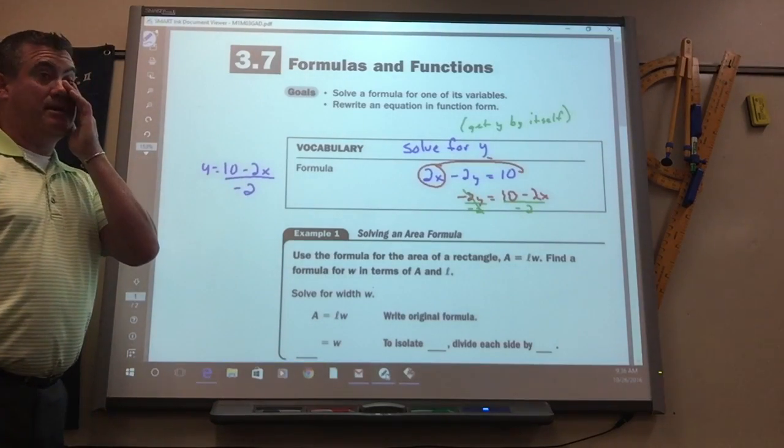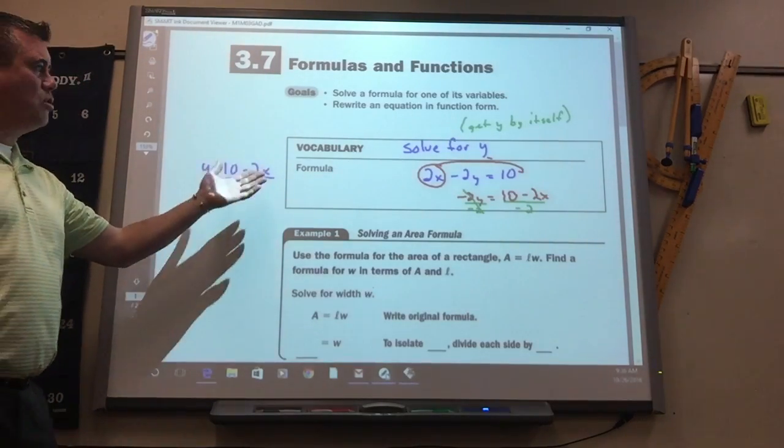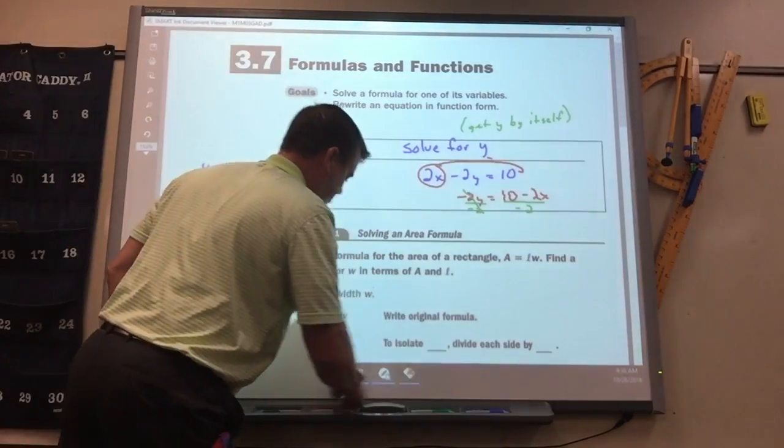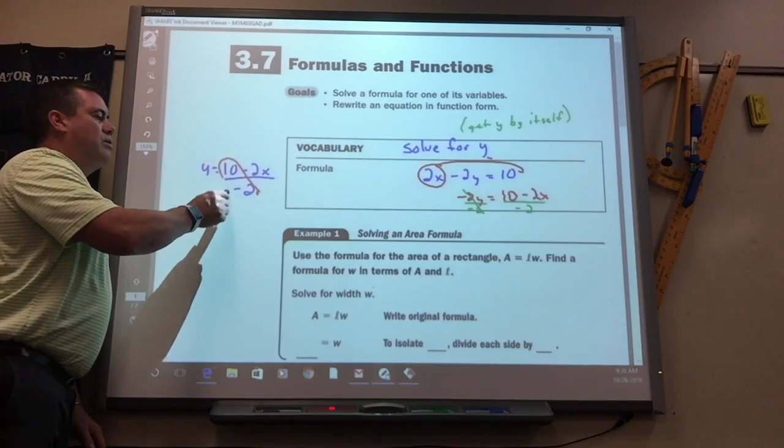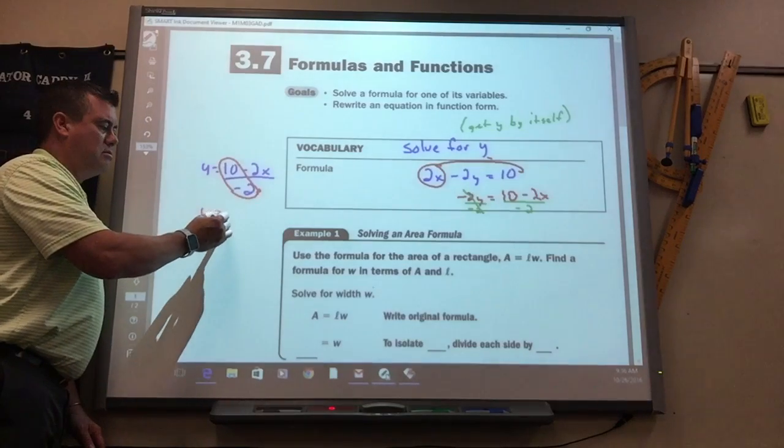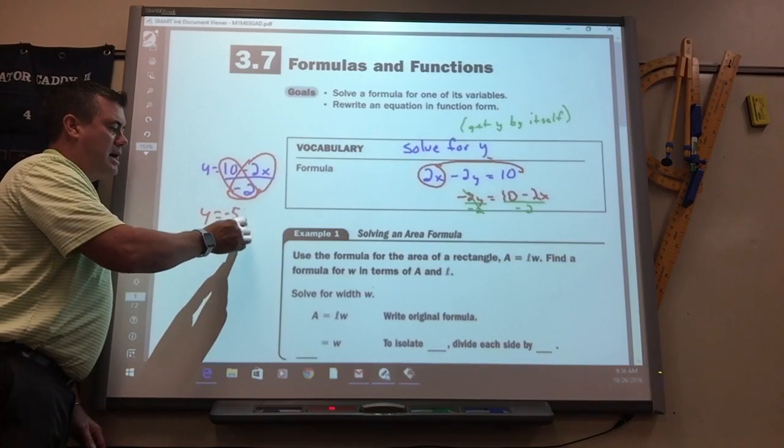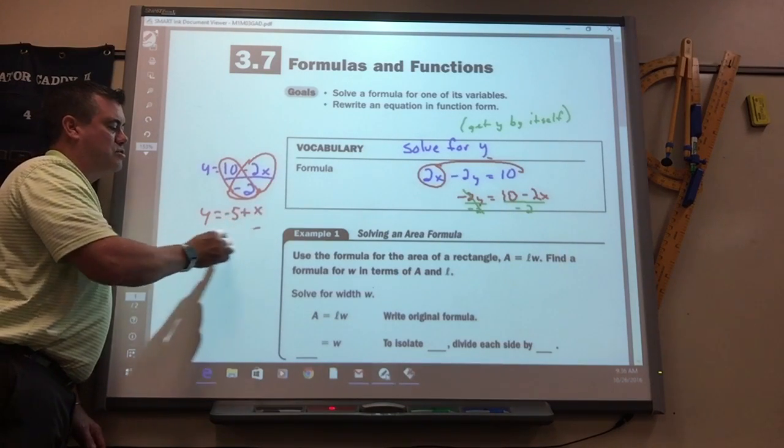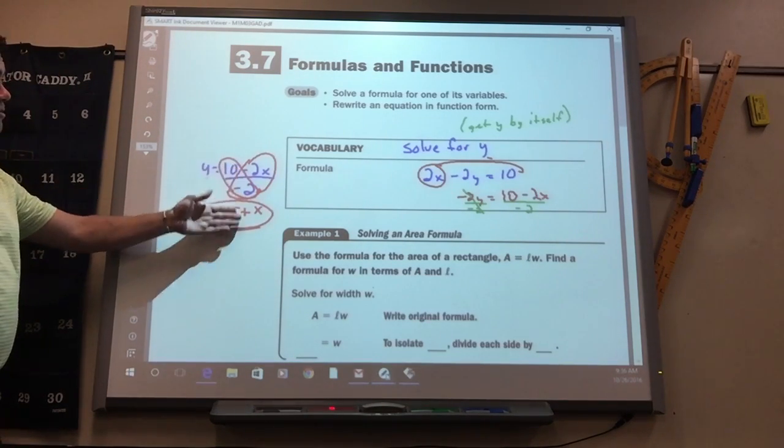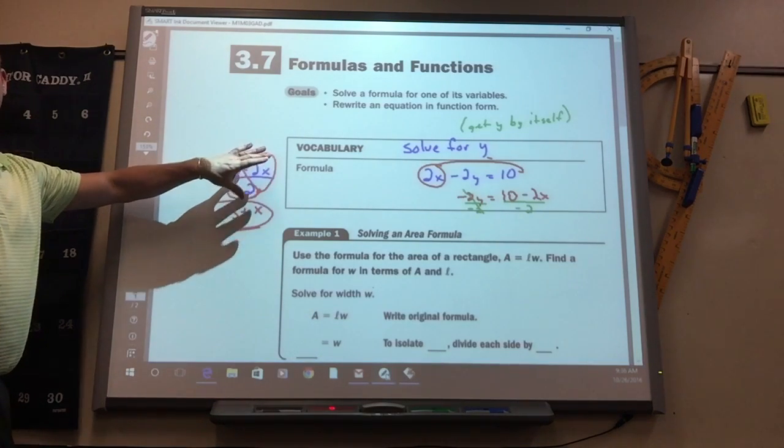y equals 10 minus 2x divided by negative 2. Now, sometimes they tell you to simplify it as far as you can. If they don't tell you that, you can quit right there because the whole idea is just to solve for y. But, if you do have to simplify it, all you do is you look at this too. We had these on the last test. What is 10 divided by negative 2? Negative 5. And what's negative 2x divided by negative 2? Positive 1x, which you can just write as x. These two mean the same exact things. It's just this is simplified and this is not. Most of the time, they don't tell us to simplify it, so you can just leave it like that.